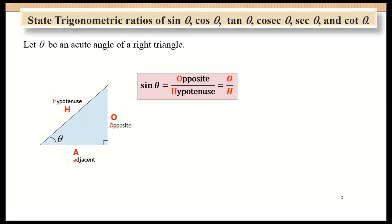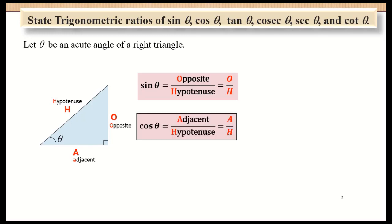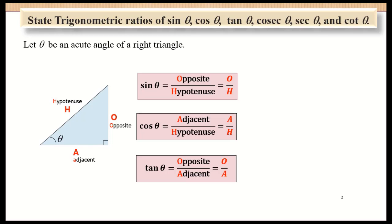Therefore, sine theta is equivalent to opposite over hypotenuse, which is O over H. Cosine theta is adjacent over hypotenuse, which is A over H. Tangent theta is opposite over adjacent, which is O over A. These are the three main trigonometric ratios.